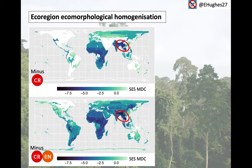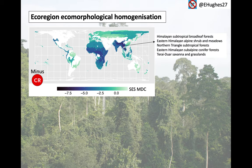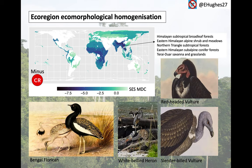For both, the top 5 most ecomorphologically imperiled regions are in the Himalayan uplands. Specifically, these are the ecoregions that become most homogenised once losing critically endangered species. Digging deeper, these regions contain some or all of these iconic species, including 4 vulture species.